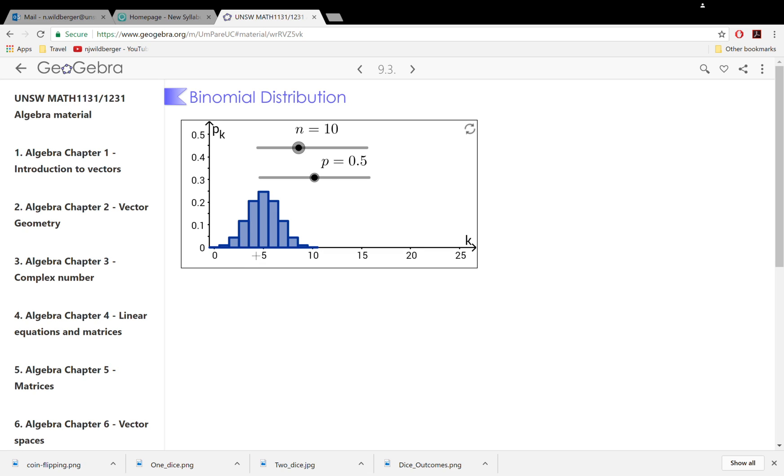It's a bunch of probabilities that are positive and add up to a total of one. Where these things come from has to do with tossing a coin. Suppose we toss a coin 10 times and we're interested in how many heads we get. That distribution is described by this binomial.